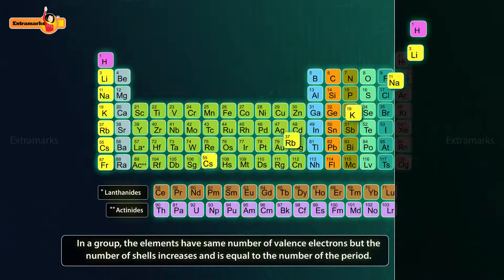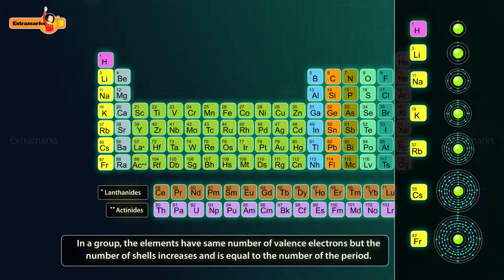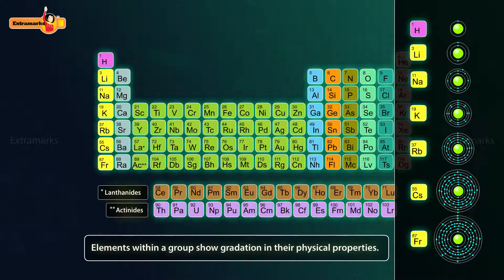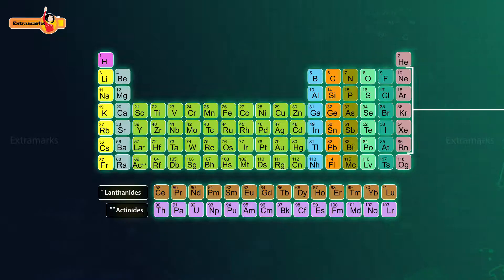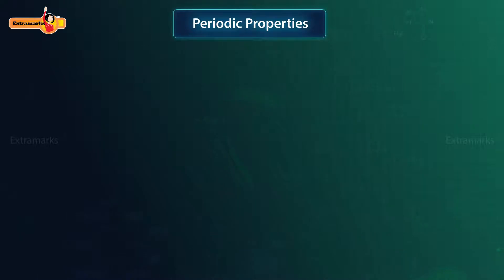Within a group, the elements have the same number of valence electrons, but the number of shells increases by one at each step and becomes equal to the number of the period. Therefore, elements in a group show similar chemical properties, but their physical properties show a regular gradation.